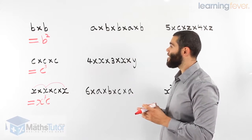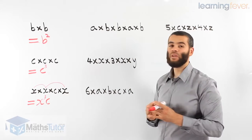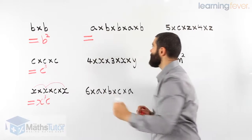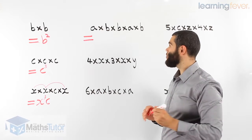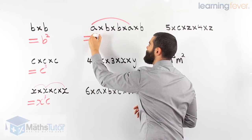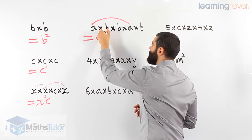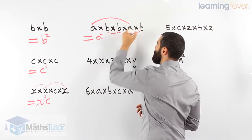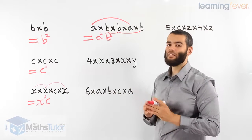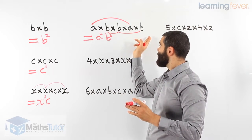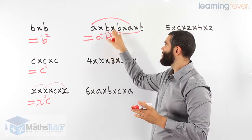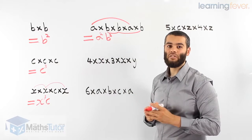Here, another long one: a times b times b times a times b. Let's make it shorter. We have 2 different pronumerals — the a's and the b's. Let's start with the a's: a times a is a squared. And b times b times b is b cubed. So a squared b cubed. Look, it's become from something so long, a very simple and short answer. It means the same thing but it's written in a much simpler format.